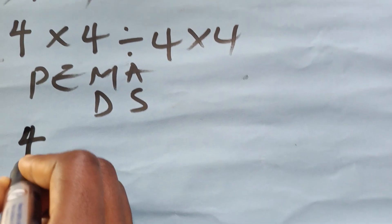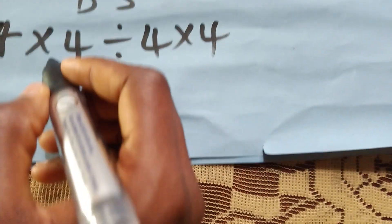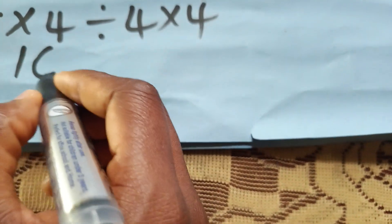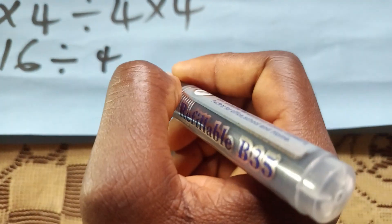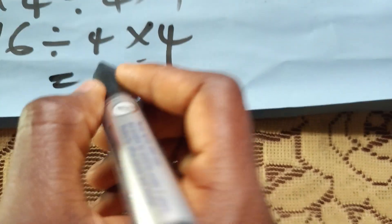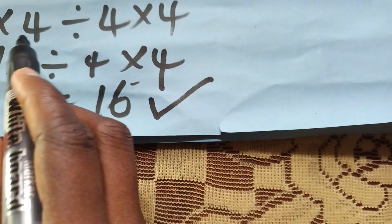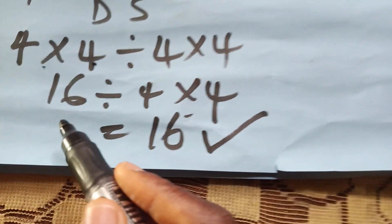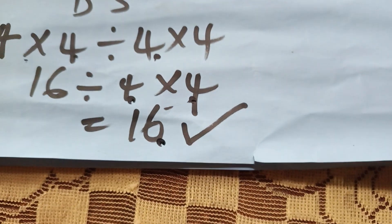Four times four is sixteen. Sixteen divided by four gives us four. Then that four times four again gives us sixteen. This answer is correct. So: 4×4=16, 16÷4=4, then 4×4=16.